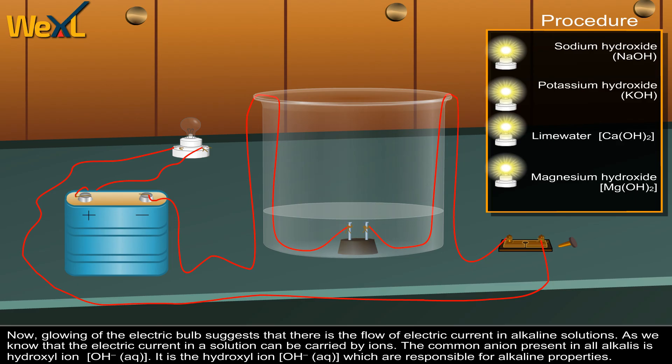As we know that electric current in a solution can be carried by ions, the common anion present in all alkalies is hydroxyl ion OH- (aq). It is the hydroxyl ion OH- (aq) which is responsible for alkaline properties.